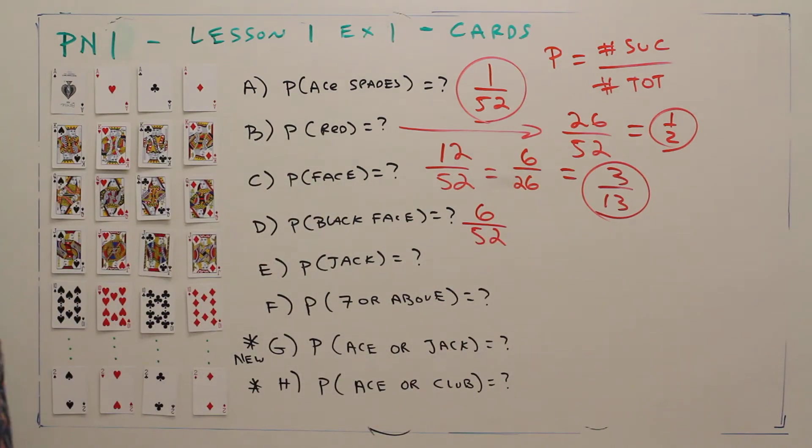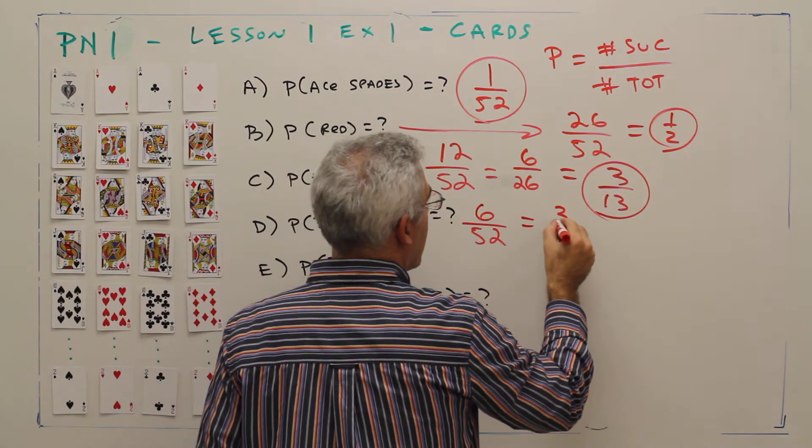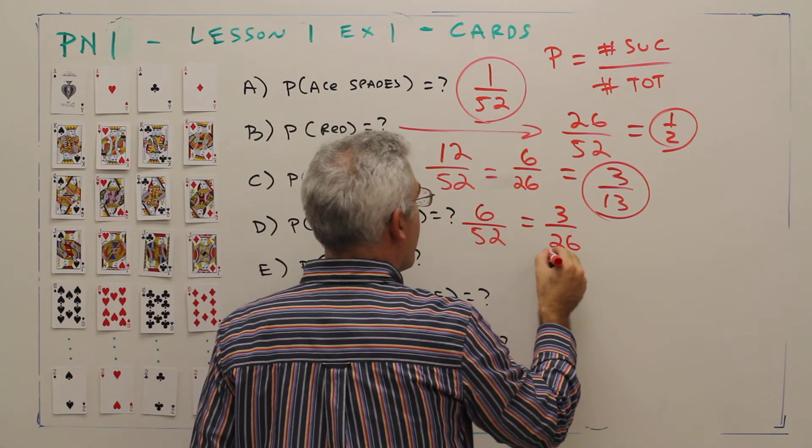That's 6 over 52. Divide through by 2, and we get 3 over 26.